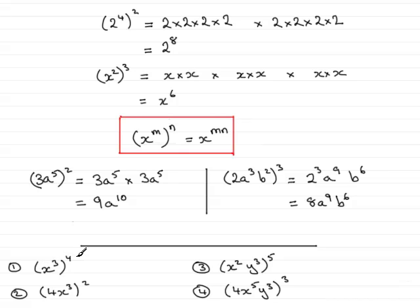This is x cubed all to the power 4. Number 2 is 4x cubed all squared. And in number 3 we've got x squared y cubed all to the power 5. And in this example we've got 4x to the power 5 y cubed all cubed. So just pause the video and I'll run through these in a minute so you can check them.